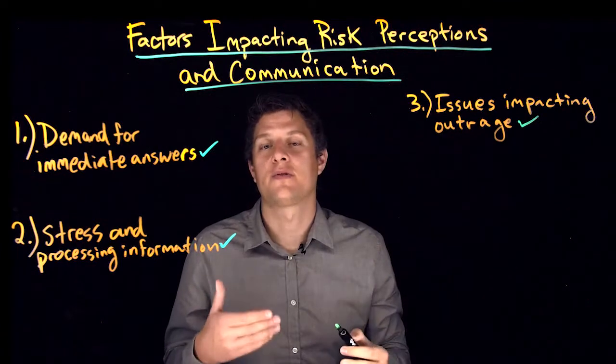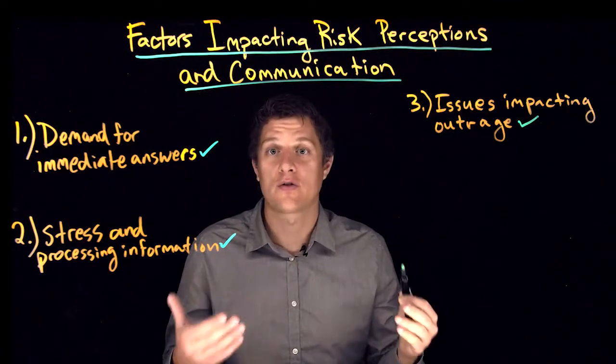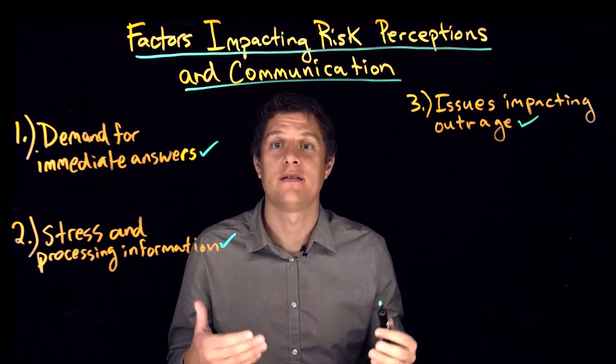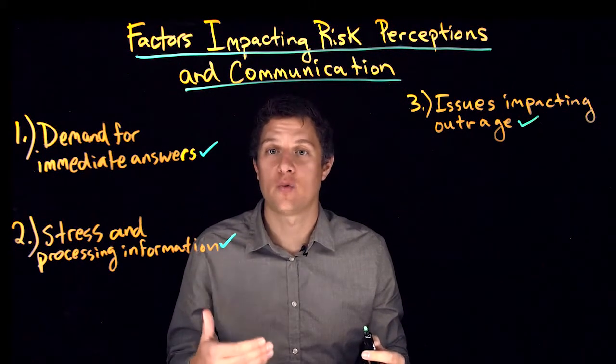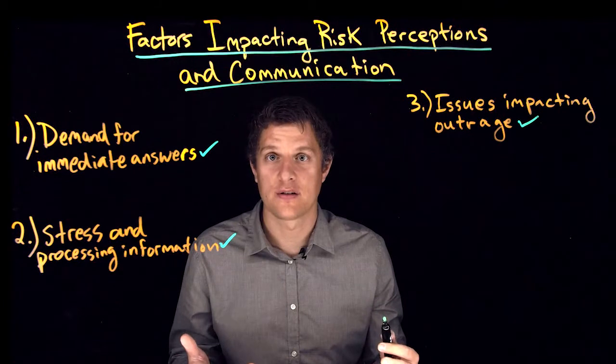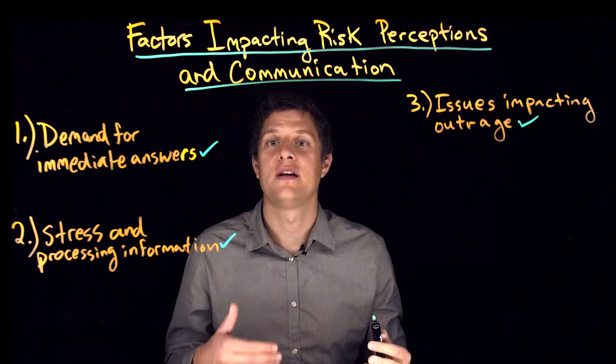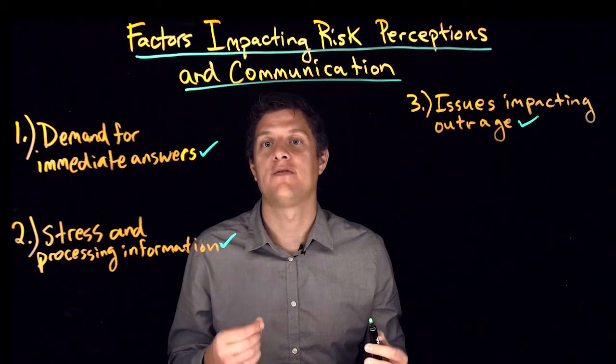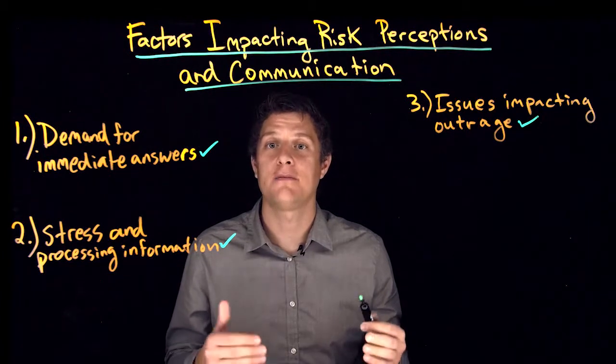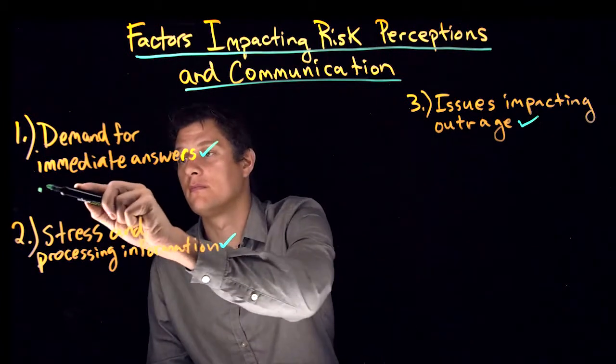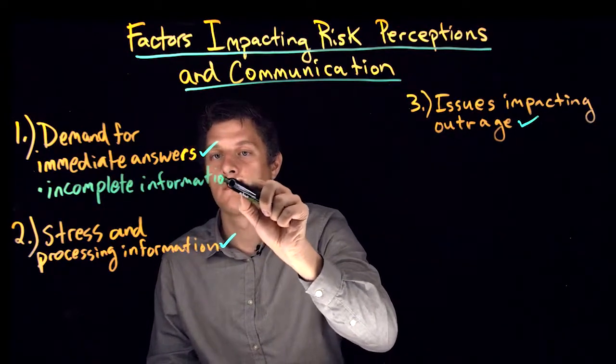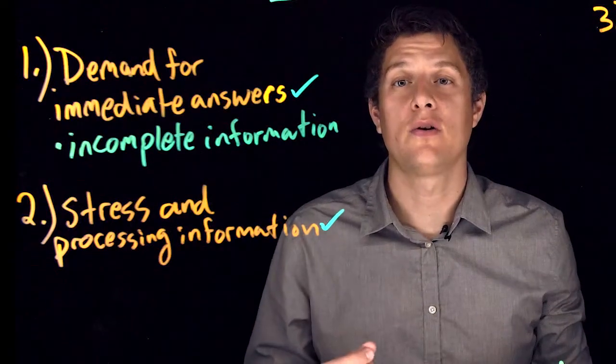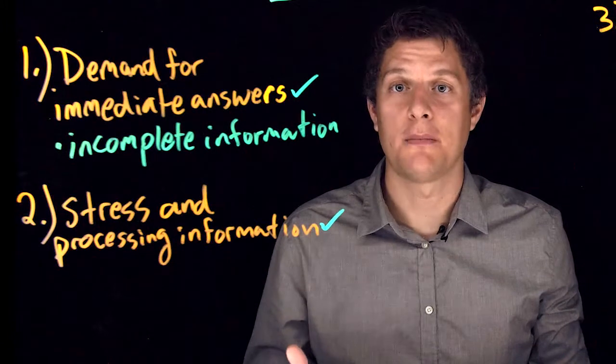Several factors almost always make communicating during a crisis or a public health threat difficult. The first is the uncertainty that surrounds new situations. Public health crises typically involve a lot of uncertainty and incomplete information. This is especially true very early on when little is known about the public health threat.